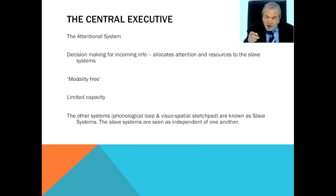Let's look at the central executive in more detail. The central executive is at the top of the model and is known as the attentional system — it directs attention to the other resources and systems. It's involved in decision-making and handles information coming in via the senses from the sensory register. It allocates resources to the other stores based on what the information is: visual information goes to one place, auditory to another. The central executive is described as modality free, meaning it can take in information from any of our senses.